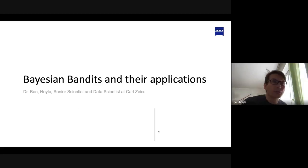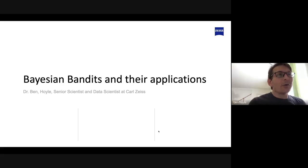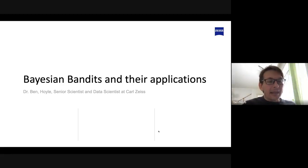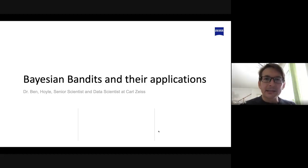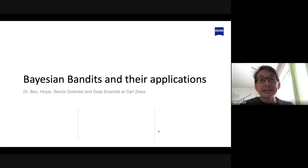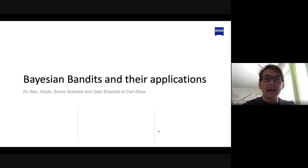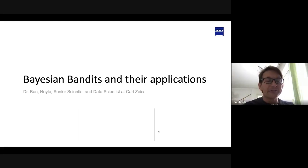So I'll start with the talk. My name is Ben. I'm a senior scientist and data scientist at Carl Zeiss. I've been with Carl Zeiss for about a year and a half, almost two years. Before this, I was an academic research scientist — an astrophysicist and cosmologist, a lot like Yabi in his previous life.